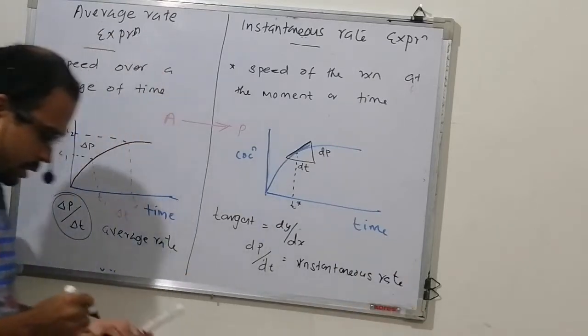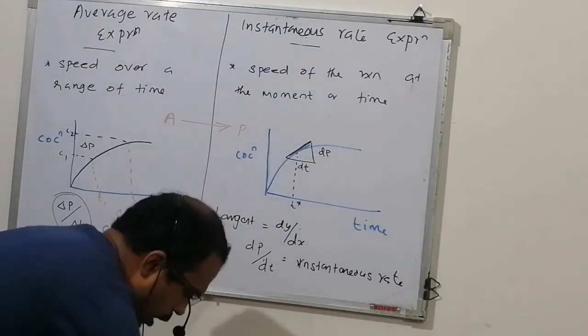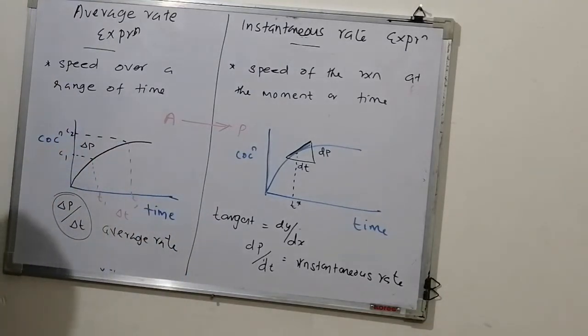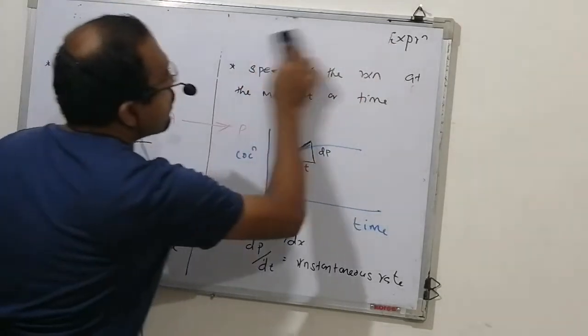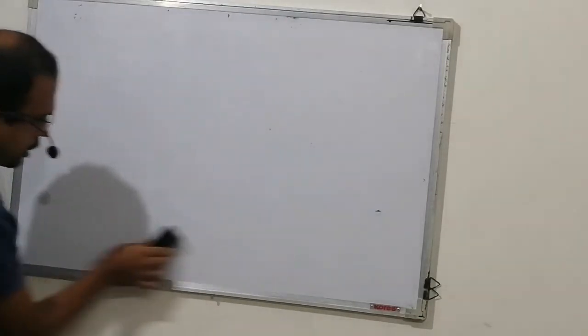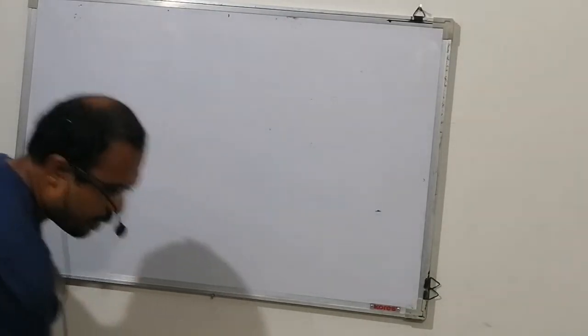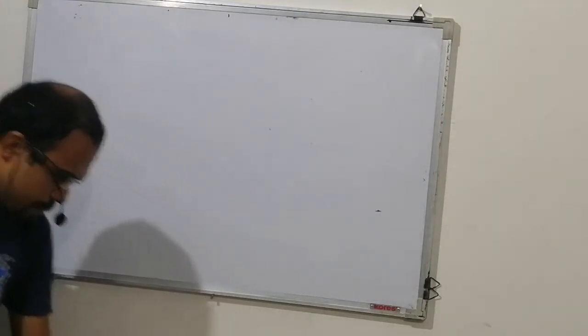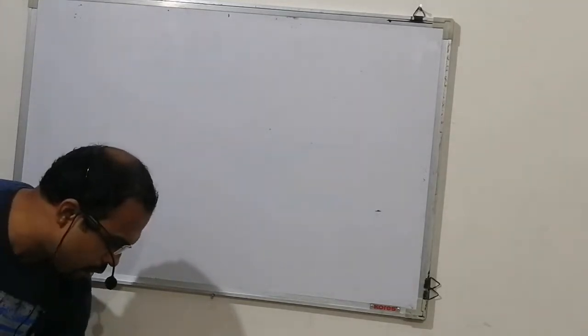Therefore, this is how we mathematically approach average rate and instantaneous rate. We can express the rate of reaction in two ways: average and instantaneous. The difference is: one is over a period of time, second is at a particular time.